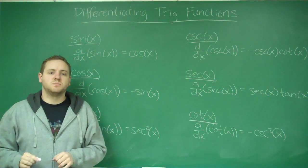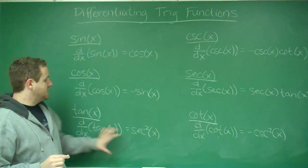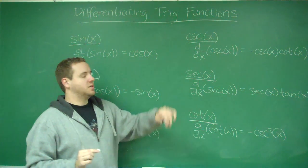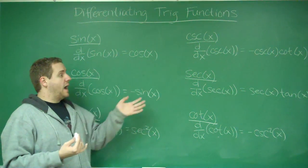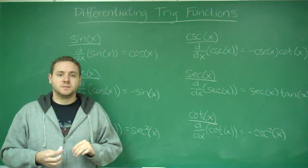Definitely things you should just memorize, but like I said, be aware that at least for these four - tangent, cotangent, secant, and cosecant - you should be able to show how you can come up with these answers by just using sines and cosines.